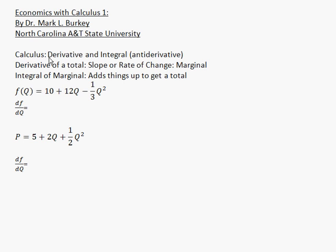There are two parts to calculus: the derivative and the integral, or antiderivative. In economics — and this is true in general — if you take the derivative of a total, it tells you the slope or the rate of change. In economics we call a slope or rate of change a marginal. The antiderivative is the opposite: if you take the integral of a function, especially a marginal function, it adds things up to get a total, or part of a total at least.